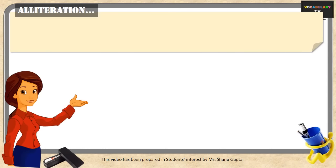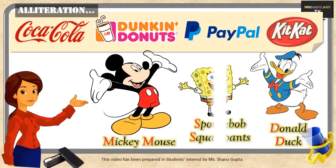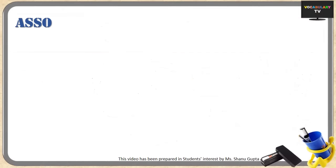There are so many brand and company names that are catchy and memorable because of alliteration — famous ones being Coca-Cola, Dunkin' Donuts, PayPal, and Kit Kat. And finally, famous cartoon characters such as Mickey Mouse, Donald Duck, and SpongeBob SquarePants all have alliteration in their names.